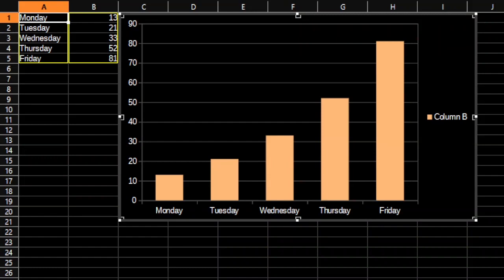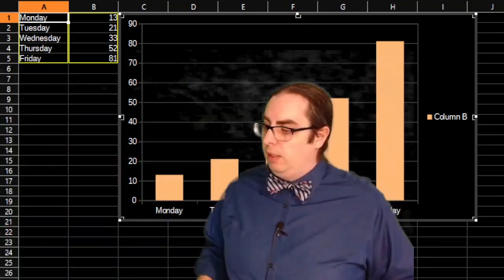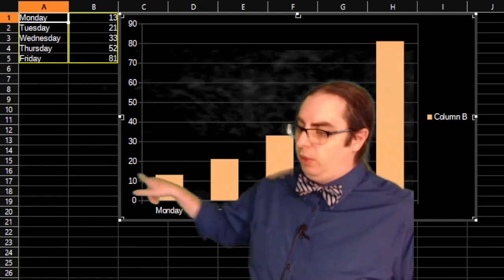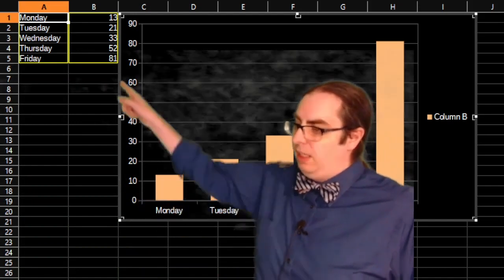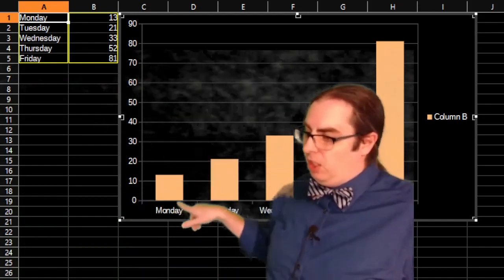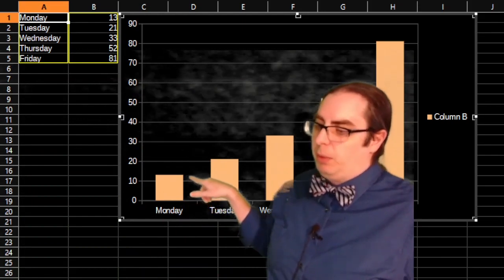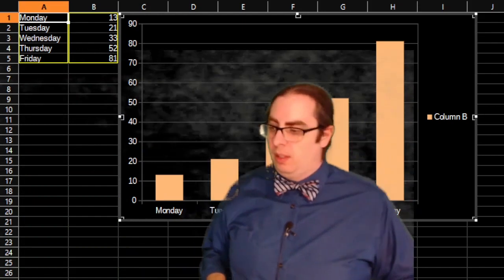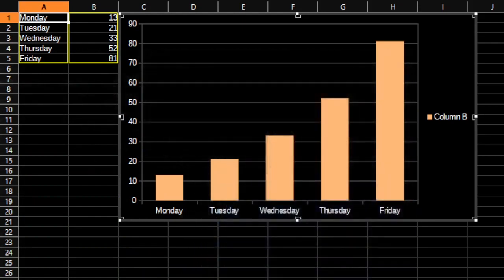Of course, on a bar graph, the height of each bar corresponds to the value of that. So Monday had a value of 13. 13 is right here somewhere between 10 and 20, exactly what we would expect.